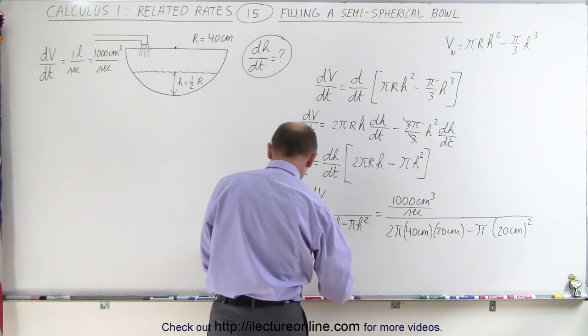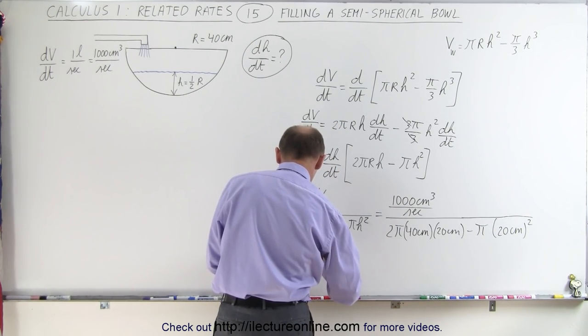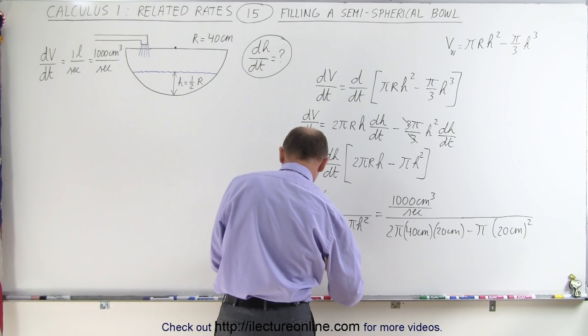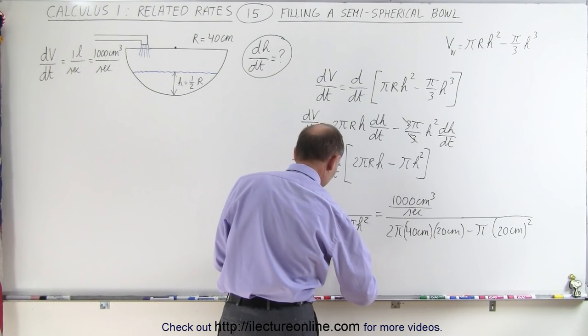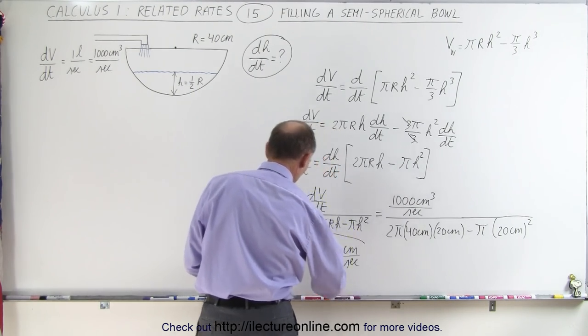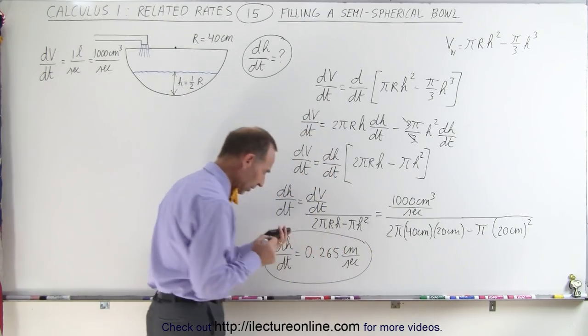So that gives us a change of the height per unit time, that would be 0.265 centimeters per second, or 2.65 millimeters per second.